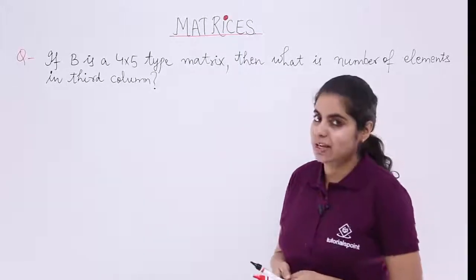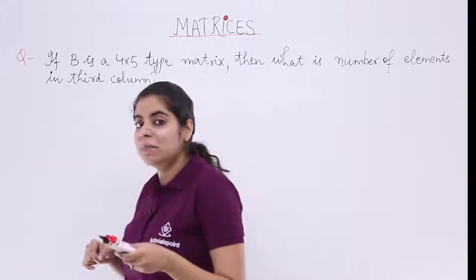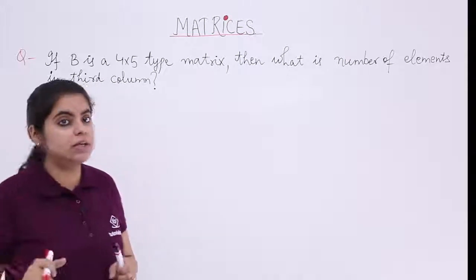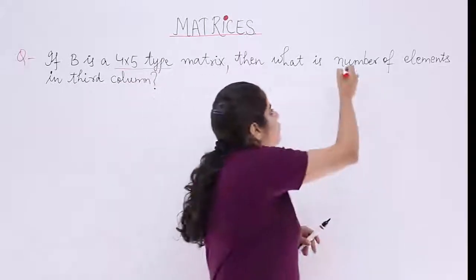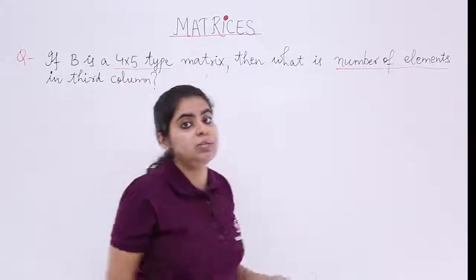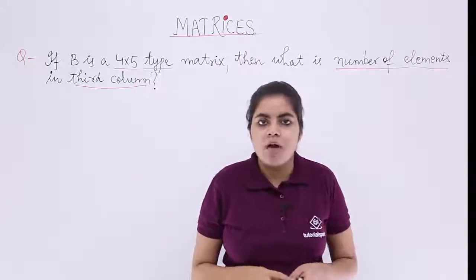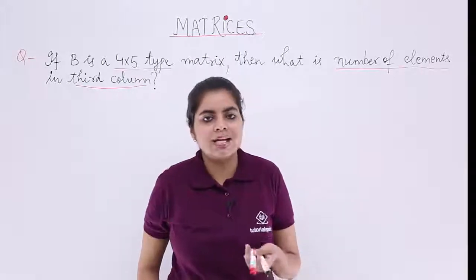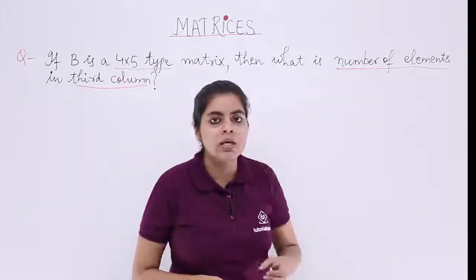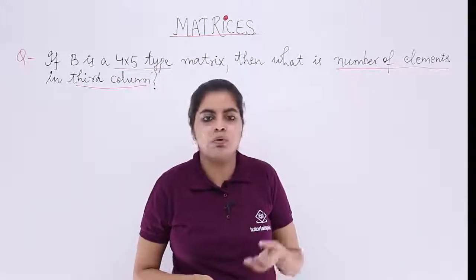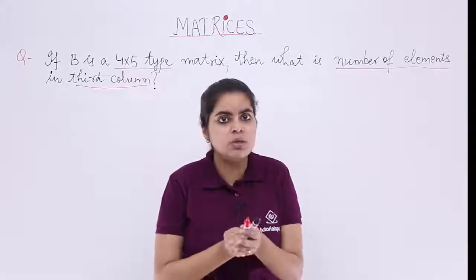Let's read the question together. If B is a 4 by 5 type matrix, 4 by 5 type matrix means the order is already defined. It is 4 by 5. Then what is the number of elements? What do we need to find? The number of elements in the third column. In these questions, one might get confused and perturbed as to we don't know anything. We don't know the number of elements because we are supposed to find. We don't know what are the elements, whether those are negative numbers or positive numbers. We don't know anything. But you don't need to know as well.